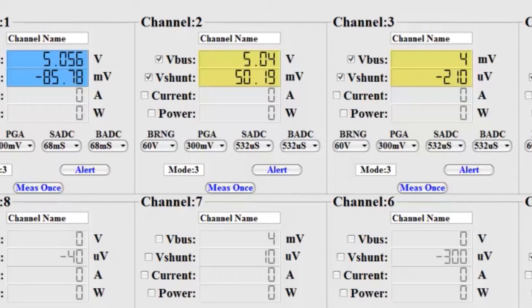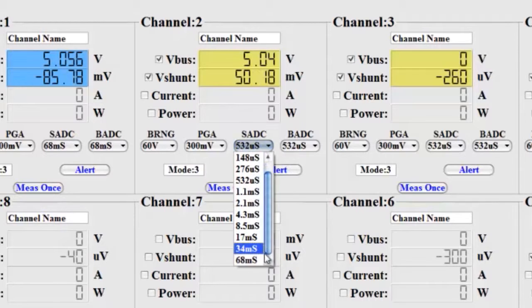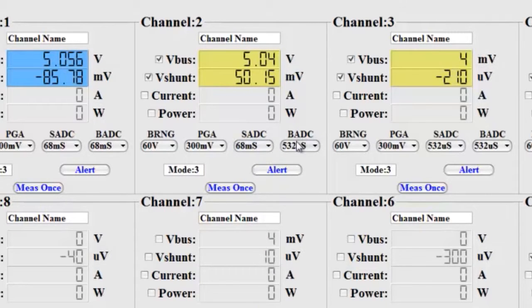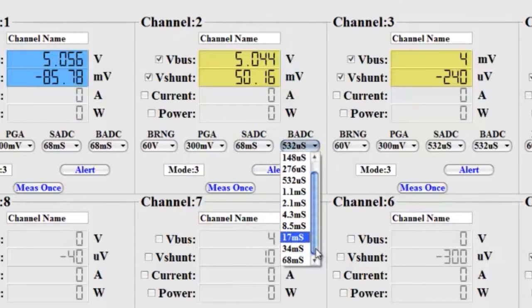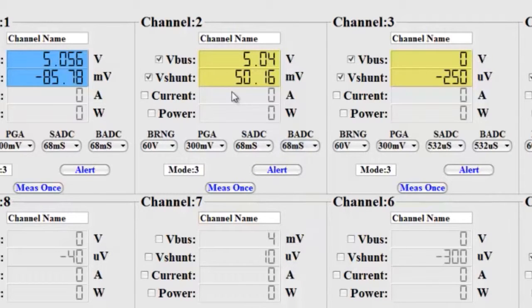So it's roughly a 1 to 100 ratio. As you can see, the VBUS is at 5 volts and the VShunt is at 50 millivolts. I'm going to adjust this to make it more accurate again. You can see that ratio is illustrated here.